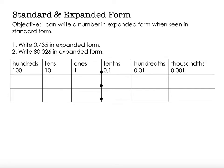Hi, this is Mrs. Nelson. We're going to continue our place value understanding and again looking at standard and expanded form, but this time we're going to see something in standard form and we're going to write it in expanded form. So our objective says essentially that I can write a number in expanded form when seen in standard form.